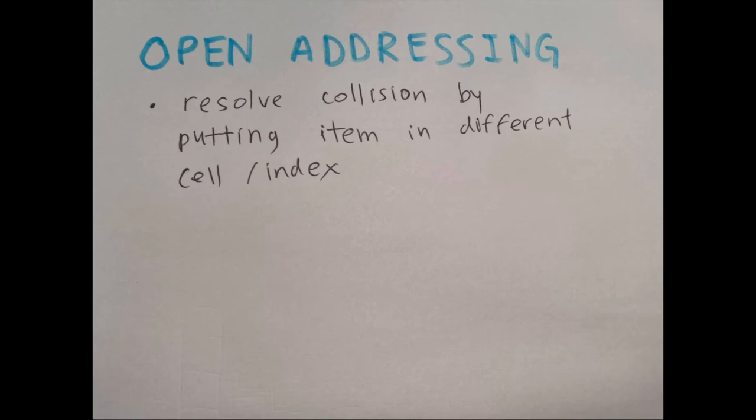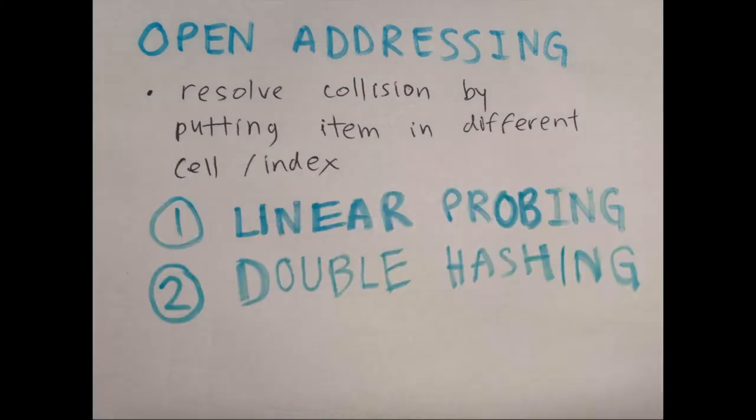Next we're going to talk about open addressing. This is a method of resolving collisions by putting the item in a different cell or a different index. There are two types of open addressing we'll cover. The first is linear probing, which is less efficient than double hashing but conceptually a lot simpler.